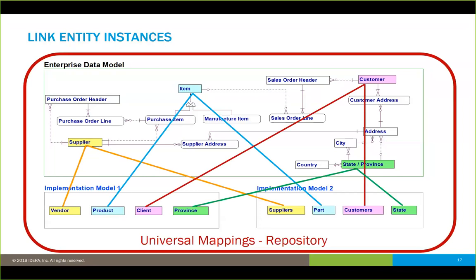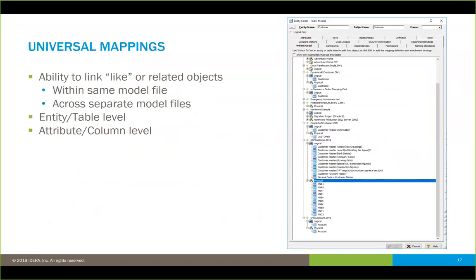In our particular product, we call these universal mappings, storing them in the metadata repository to link between all models. The benefit is shown in a 'where used' tab — it gives an automatic byproduct showing all the links created from the enterprise model down to other models. You can generally focus on the entity or table level first, but for key or critical data elements like social security numbers that span multiple systems, you want to tie those important attributes together regardless of where they're actually stored.